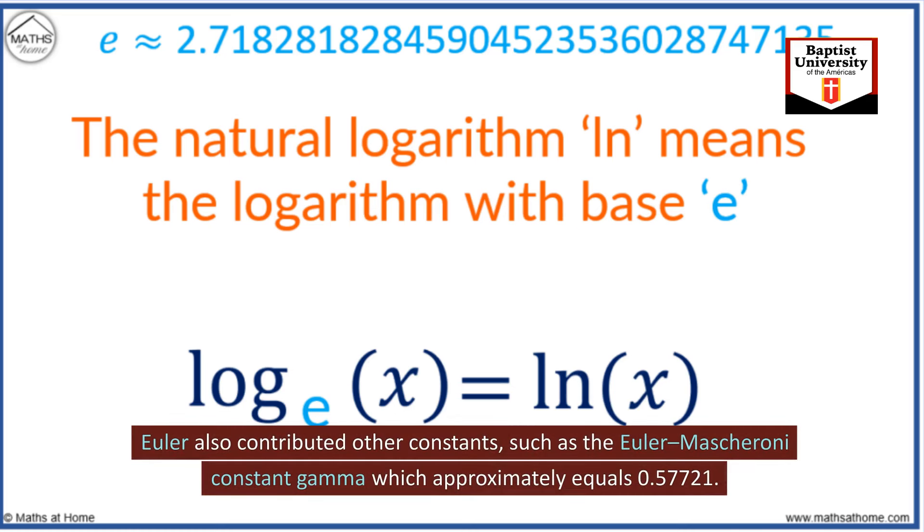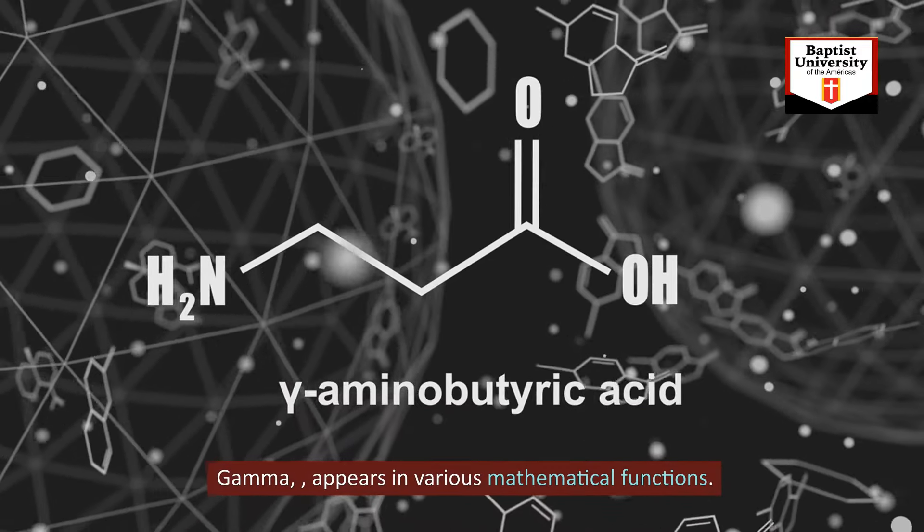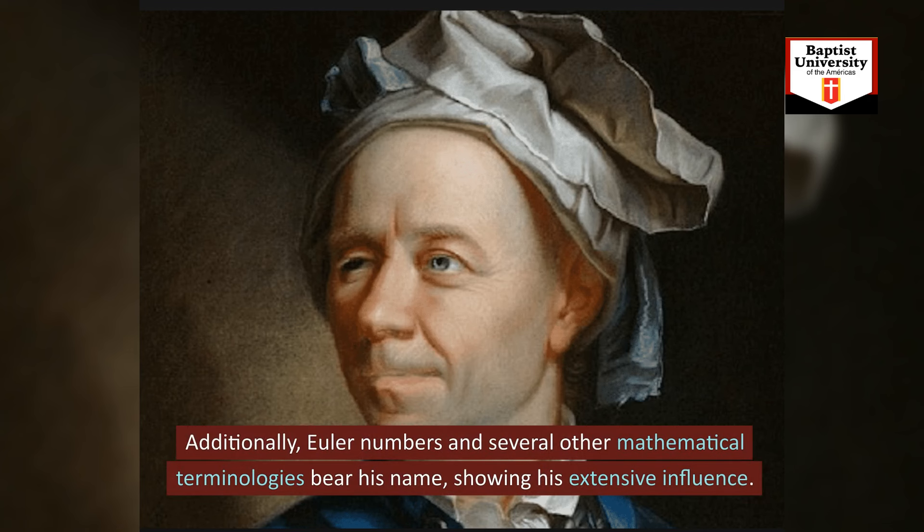Euler also contributed other constants, such as the Euler-Mascheroni constant gamma, which approximately equals 0.5772. Gamma appears in various mathematical functions. Additionally, Euler numbers and several other mathematical terminologies bear his name, showing his extensive influence.